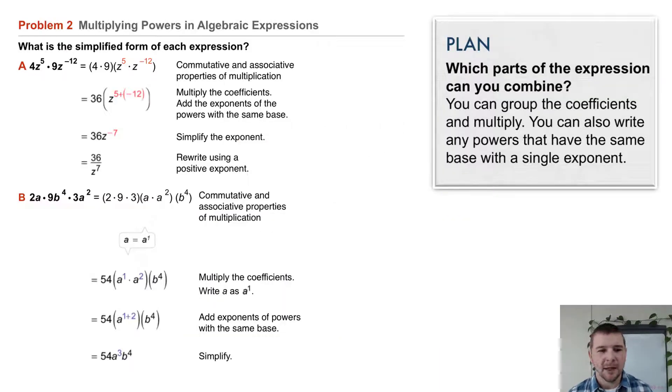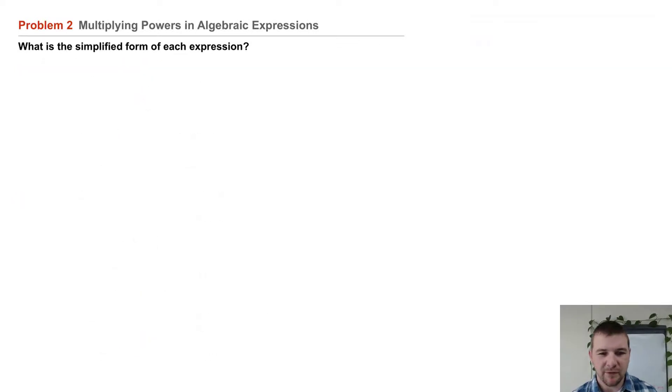Problem two, multiplying powers in algebraic expressions. What is the simplified form of each expression? Part a, 4z to the fifth power times 9z to the negative twelfth power.